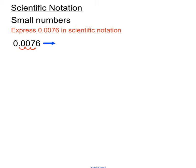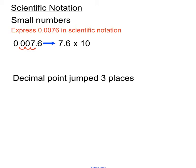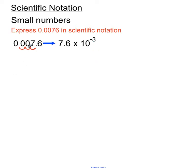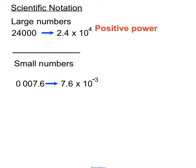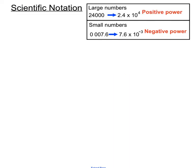Our final answer will be 7.6 times 10 to the power of 3, but we need to put a minus on the power. Because this number was a very small number to begin with, it creates a negative power. Large numbers create a positive power when we move the decimal point, and small numbers create a negative power. When we start with a 0-point type number that creates a negative power, because of the different directions the decimal point is moving.